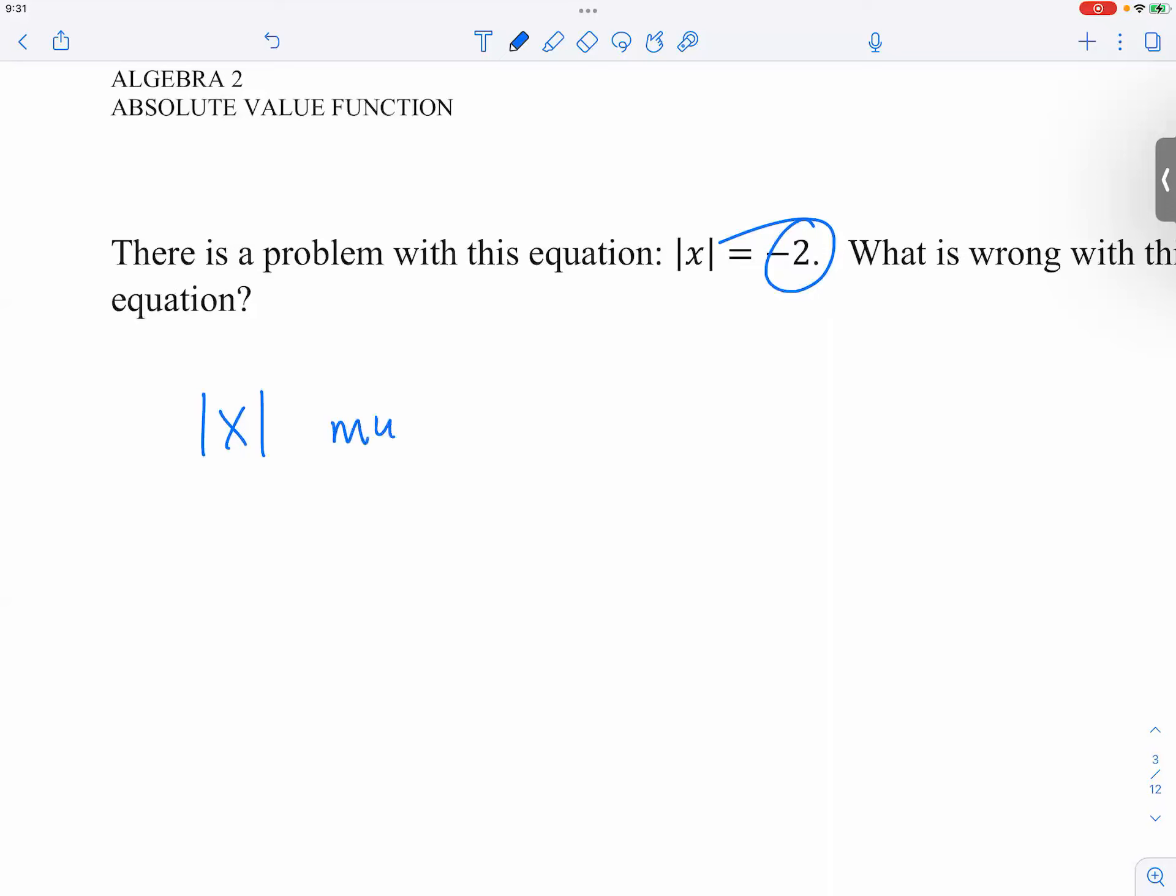Because when we have absolute value of x, not x by the way, it's the whole thing, the absolute value of x must be, the language is very strong here, it must be zero or greater.